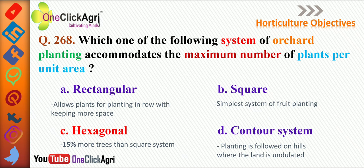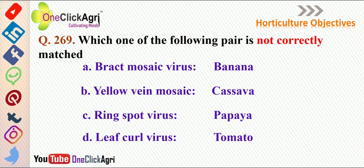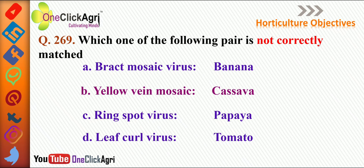The other planting system options: The rectangular system allows planting in rows with more space between rows. The square method is the simplest system of fruit planting. The contour system is used on hills where the land is undulated. Next question: Which of the following is not correctly matched? The right answer is yellow vein mosaic, because yellow vein mosaic virus is observed in bhindi (okra).